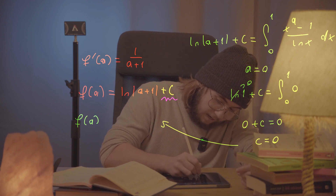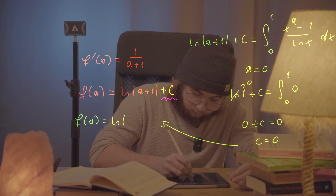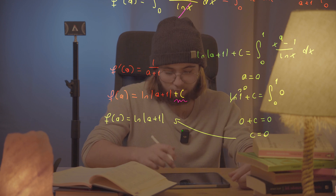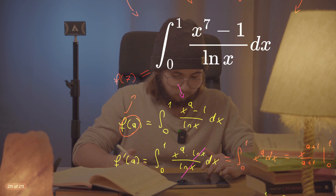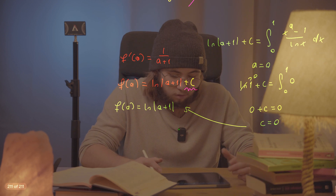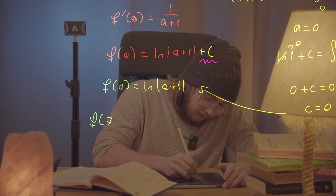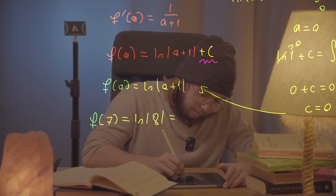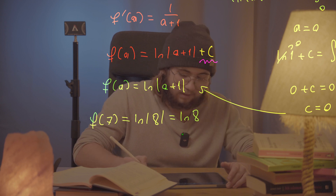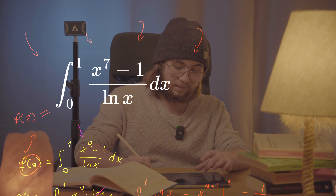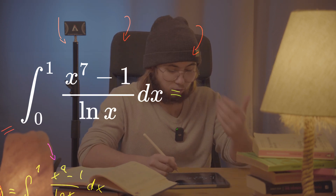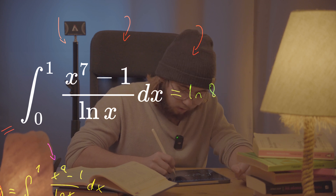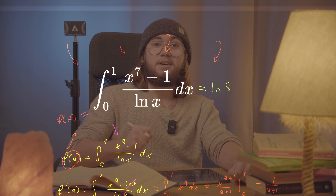Because C equals zero, we get neatly that f(a) equals simply the natural log of the absolute value of (a+1). Now we plug in a equal to seven: f(7) equals the natural log of (7+1), which is the natural log of eight. So the answer to our original question — the integral from zero to one of (x^7 minus one) over the natural log of x dx — is the natural log of eight.